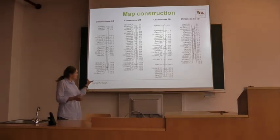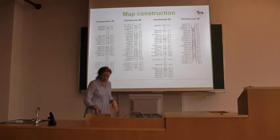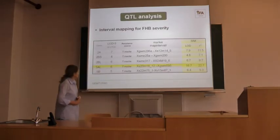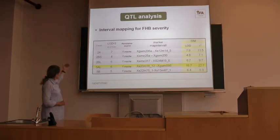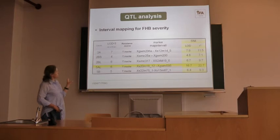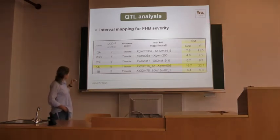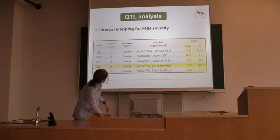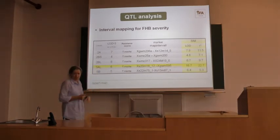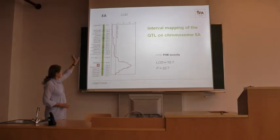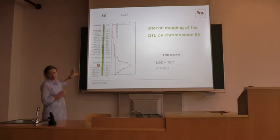Now you bring this map together with your phenotypic data for the final QTL analysis. In this specific case we found five loci on the genome which were significantly influencing Fusarium head blight severity. The highest-performing QTL was on chromosome 5A. You can also draw a graph showing those QTLs — you see here a probability graph on chromosome 5A.